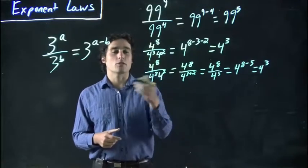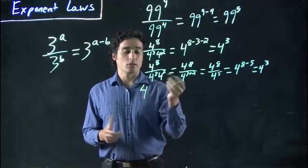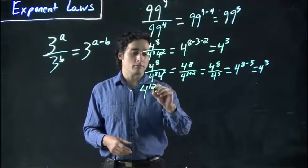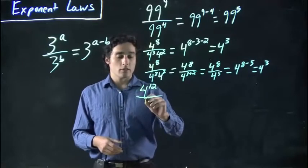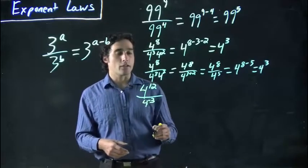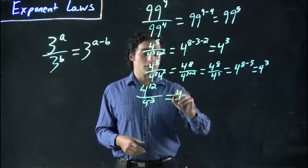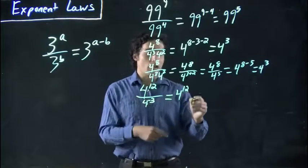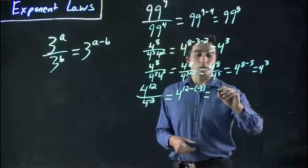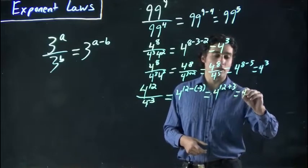The rules must make it all come out to the same. But what if we start introducing negatives? Well, 4 to the 12 over 4 to the negative 3. Again, there's going to be two different ways we can look at doing this one. Just using a simple division rule, well, I have to subtract. But I'm subtracting minus 3. So that actually becomes 4 to the 12 plus 3, or 4 to the 15.